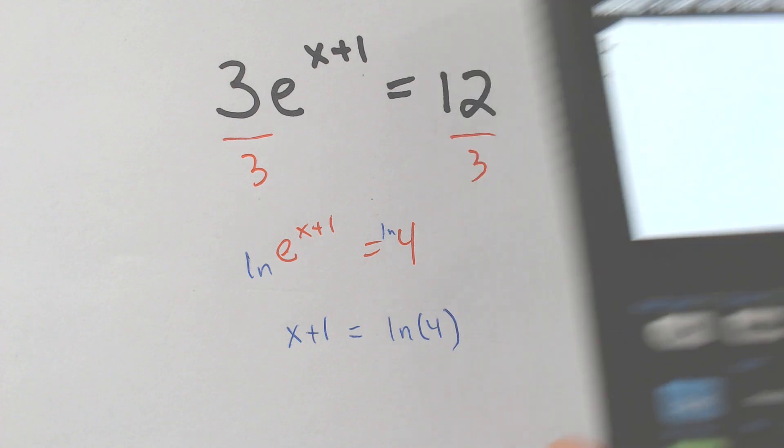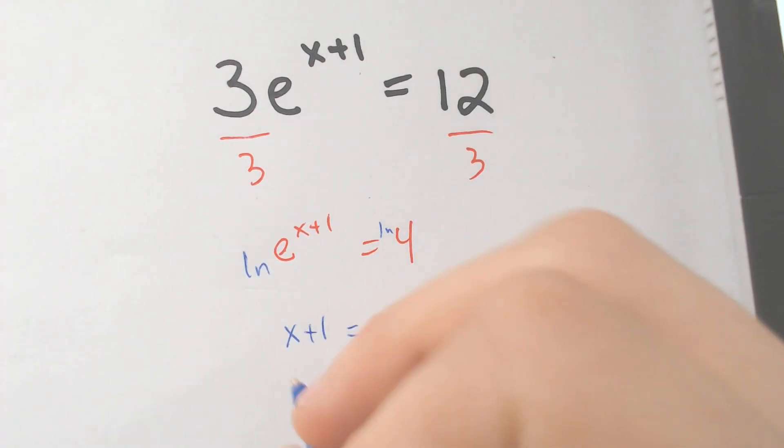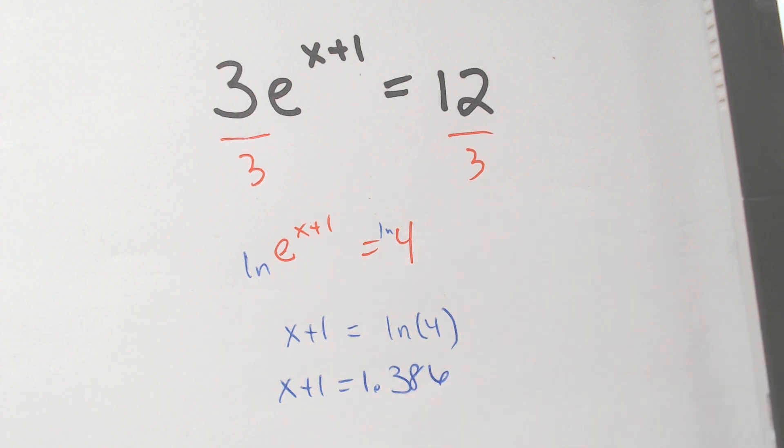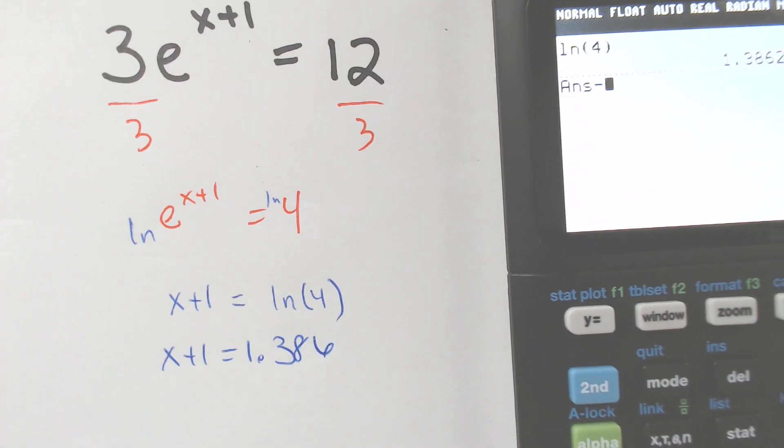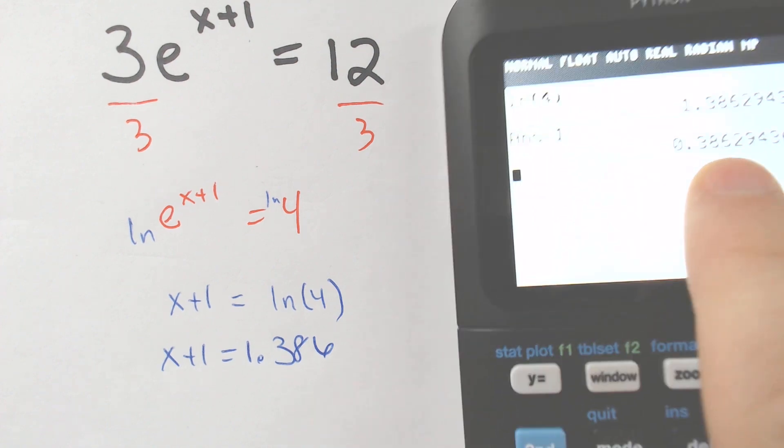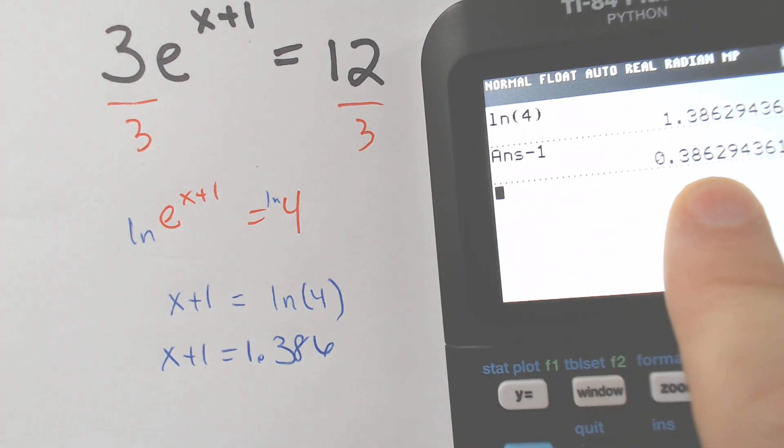So LN of 4 was the actual problem. That is 1.386. 1.386. So we have X plus 1 equals 1.386. Subtract the 1 from both sides, minus 1, and we get 0.386.